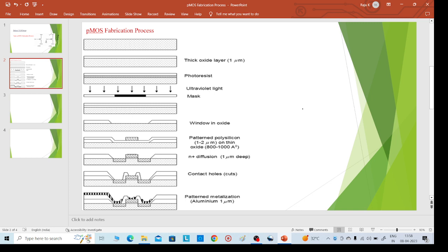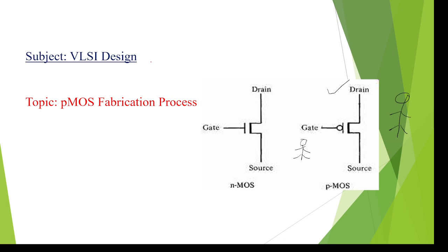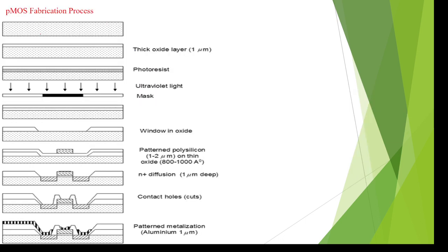For the first step, we need to take an N-substrate. The N-substrate has electrons from the silicon material. This is the first step to design a pMOS transistor.